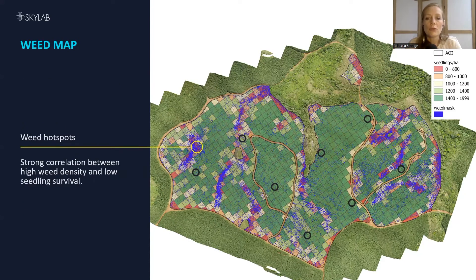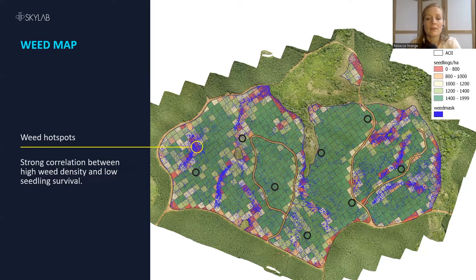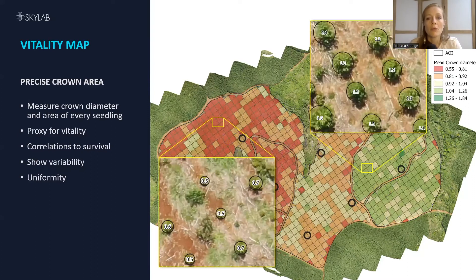We not only show you what is happening in your plantation, but also help you to understand why. Here we have one of our weed density maps overlaid over the seedling density grid map, and it shows clearly that the presence of competing vegetation corresponds almost perfectly to the areas of poor seedling survival. We also measure the precise diameter of each seedling, and at this stage, when there's no competition for space, that gives a very good indication of the relative health of the seedlings.